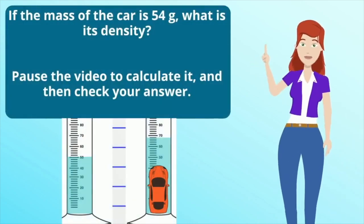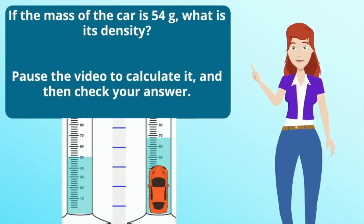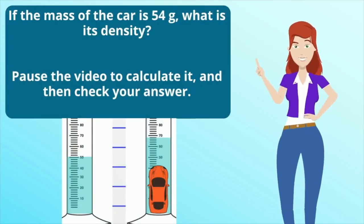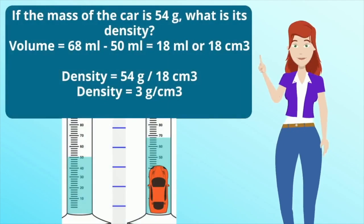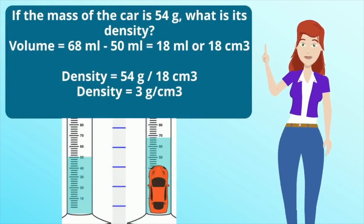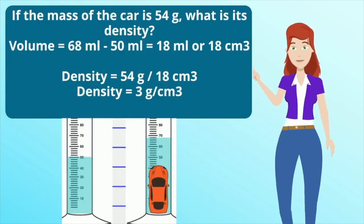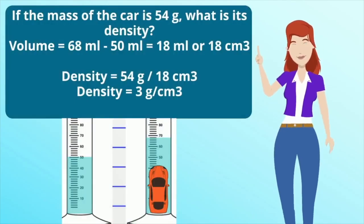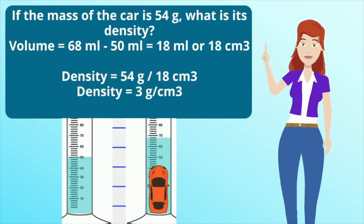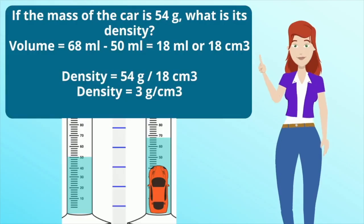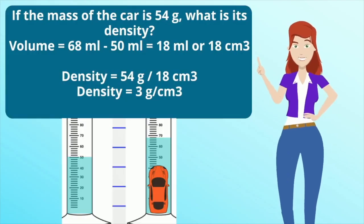If the mass of the car is 54 grams, what is its density? Pause the video to calculate it and then check your answer. The volume equals 68 milliliters minus 50 milliliters, so that gives us 18 milliliters or 18 centimeters cubed. Density is 54 divided by 18, so the density is 3 grams per centimeters cubed.